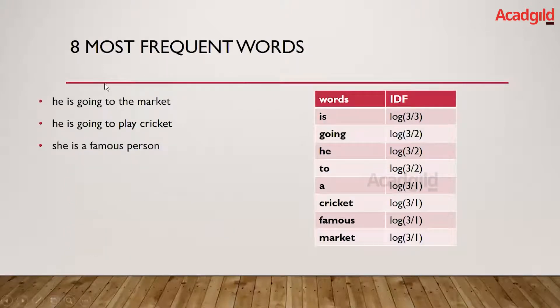Now let us go to the next slide and apply this to our eight most frequent words computed from our previous bag of words. On the right-hand side you can see that for words like 'is', 'going', 'he', 'to', 'a', 'cricket', 'famous', and 'market', we get IDF values such as log(3/3), log(3/2), and so on.